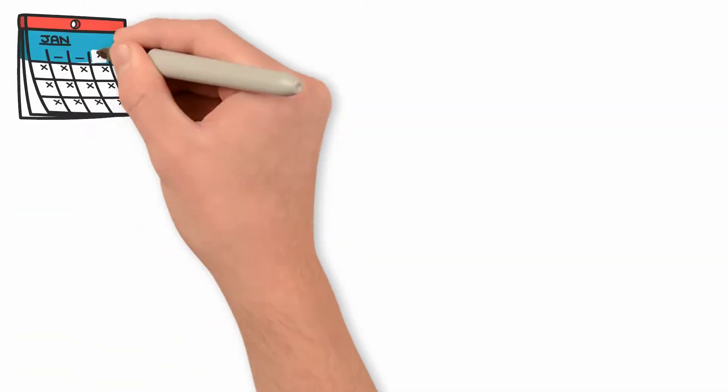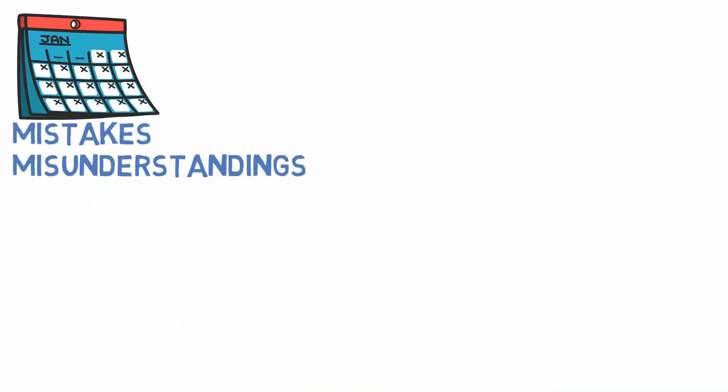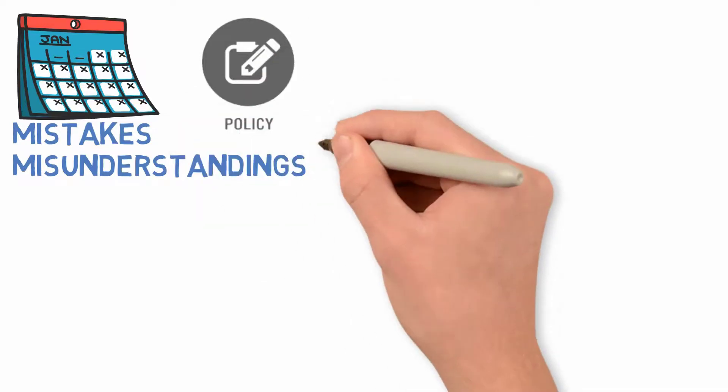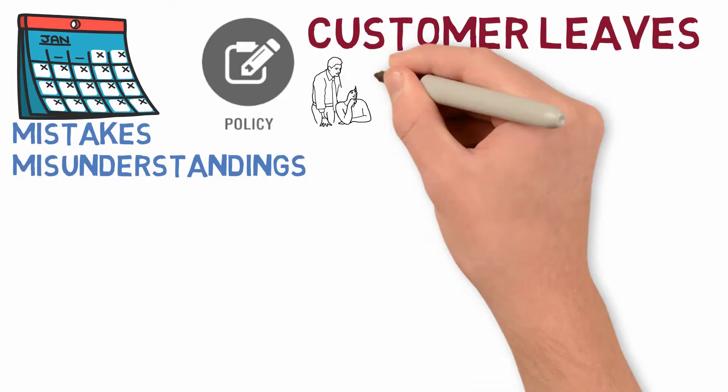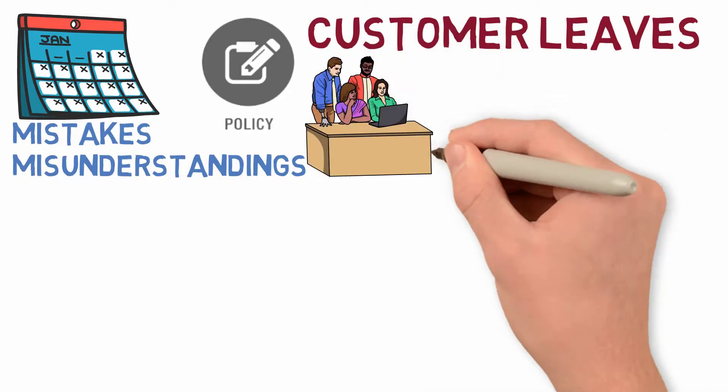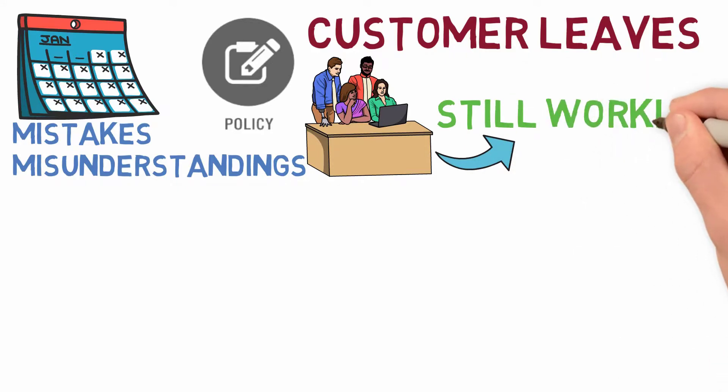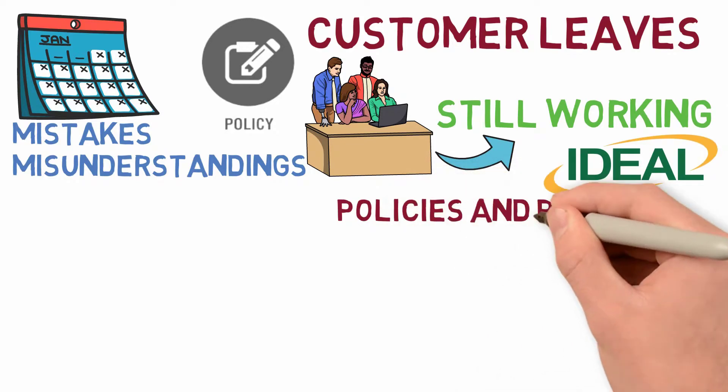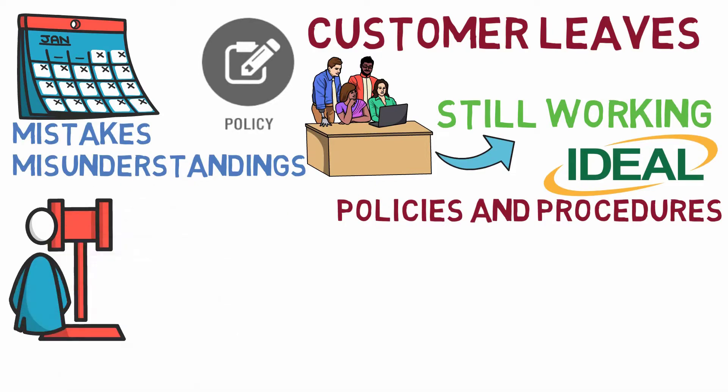Policies and procedures should also be up to date, so there are no mistakes or misunderstandings. For example, if you have a policy stating your employees need to stay until the last customer leaves, but then someone clocks out before everyone is gone, then that will cause problems because you now have people who think they can leave early while others are still working. It would be ideal to have employees sign off on the policies and procedures so they are aware of what is expected from them, as well as ensuring there are no legal issues if any disputes arise later on down the road.